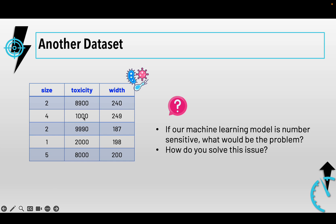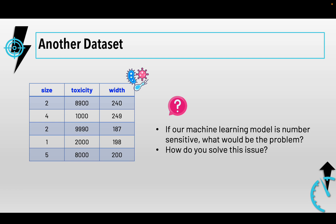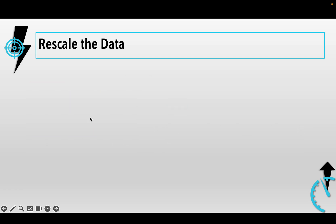So what is the problem when you build a machine learning model with a dataset like this? If your machine learning model is data-sensitive, it will be driven by the toxicity and ignore the influence of size and width. To handle this issue, you need to do data rescaling so that all columns are on the same scale, allowing your model to better find patterns.